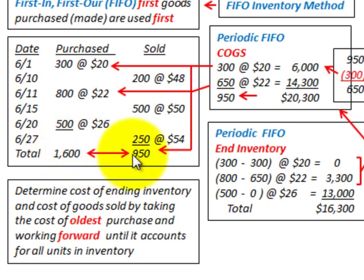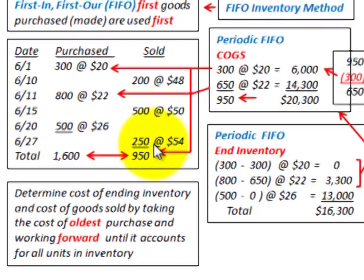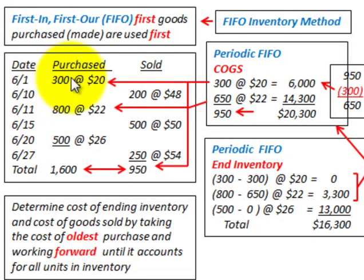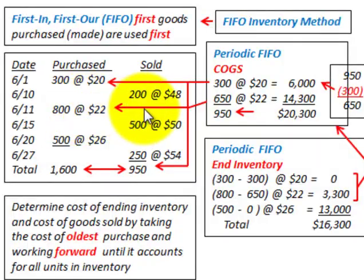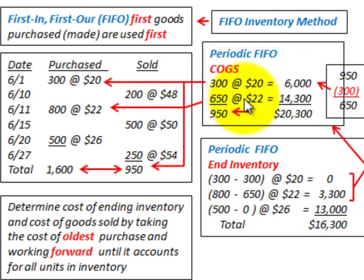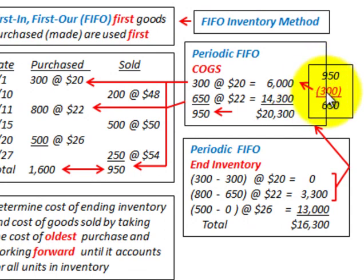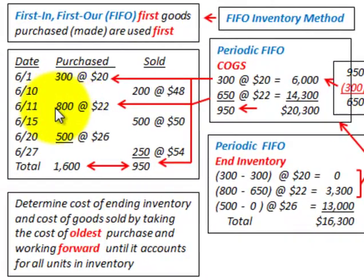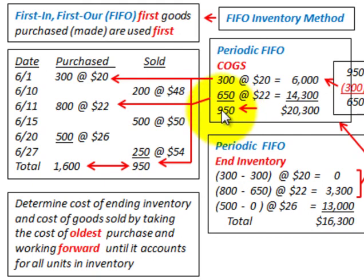So we are going to have some ending inventory based on that. For our 950 units sold: first, 300 units from the oldest inventory at $20 a piece gives us $6,000 for cost of goods sold. The next amount comes out of the next oldest quantity of 800 units purchased. We have 650 more to account for — 950 total less the 300 units already used. So 650 units at $22 a piece gives us $14,300. The total cost of goods sold for 950 units is $20,300.